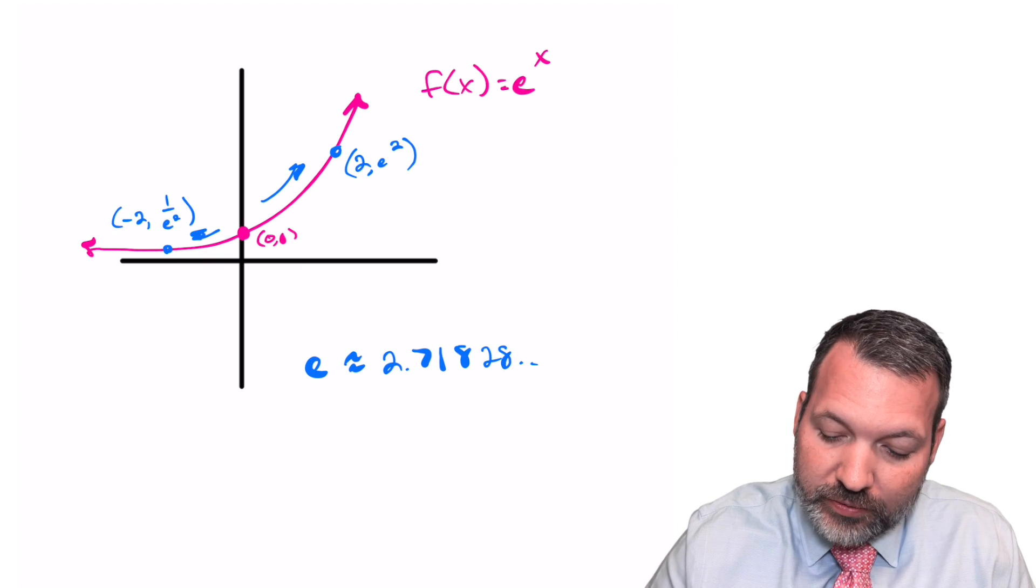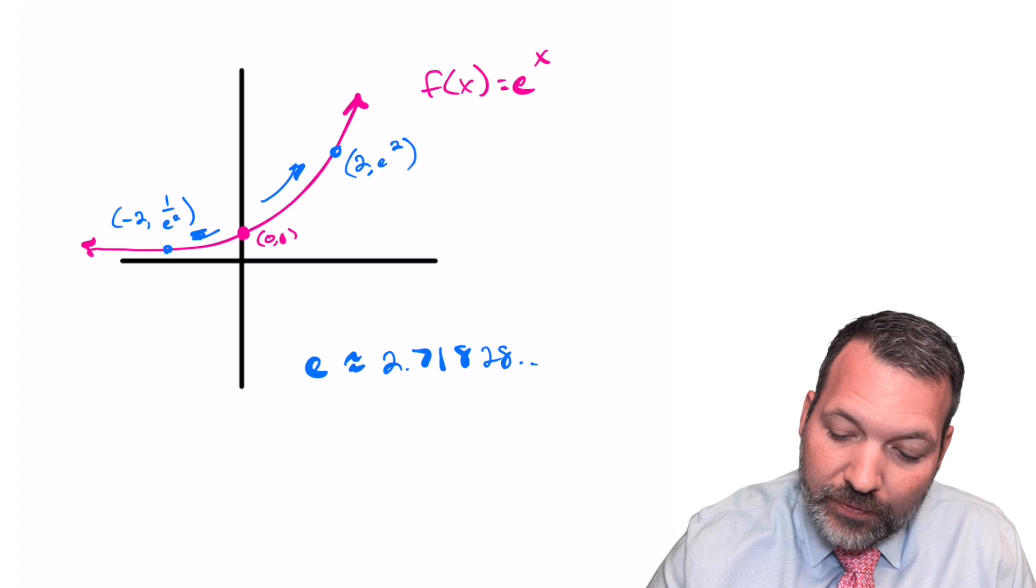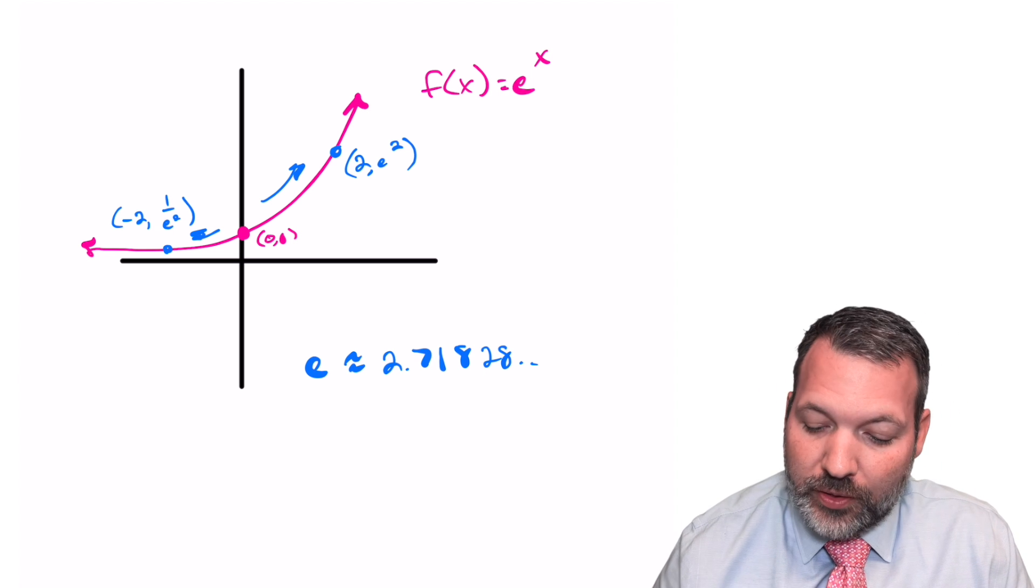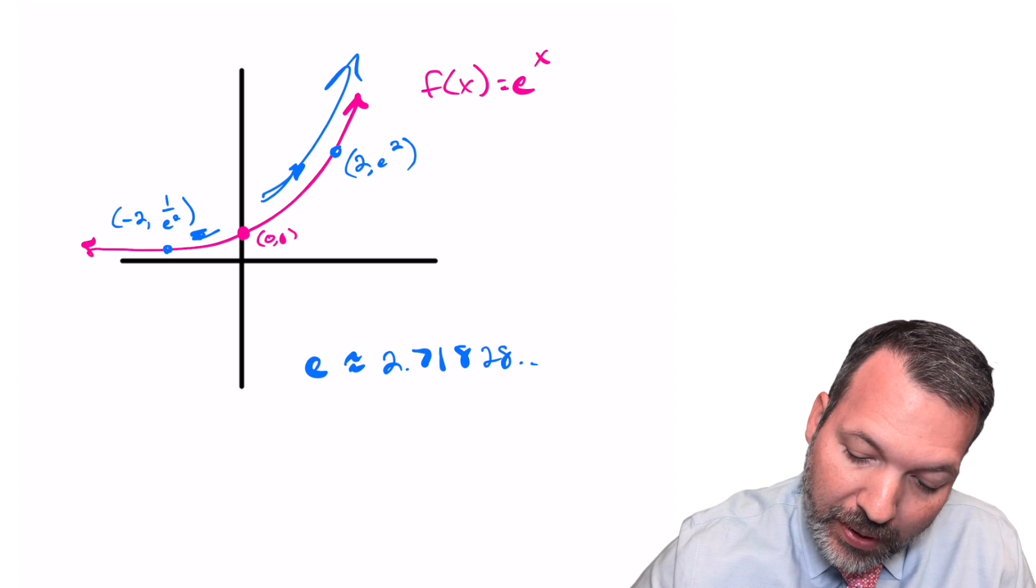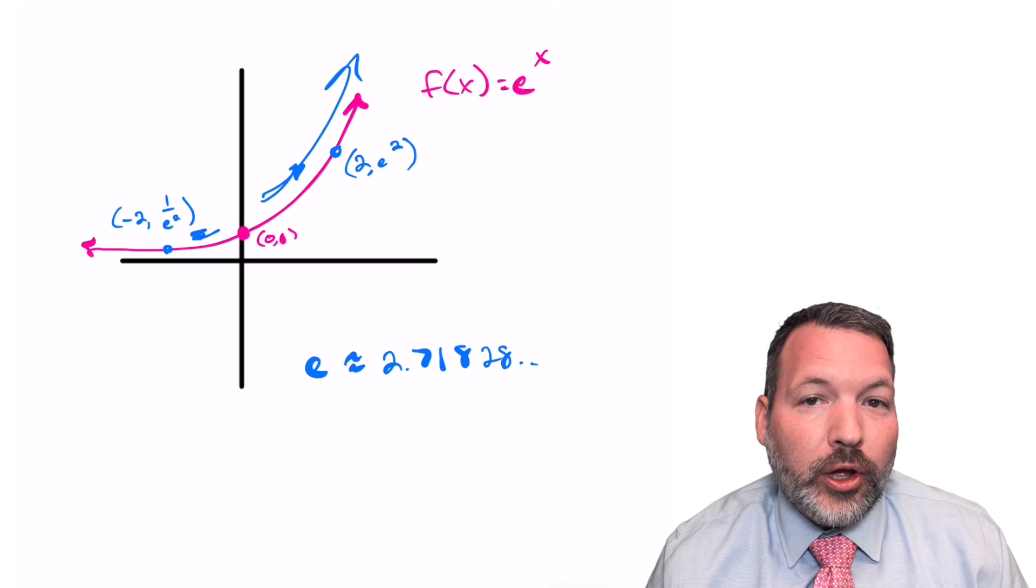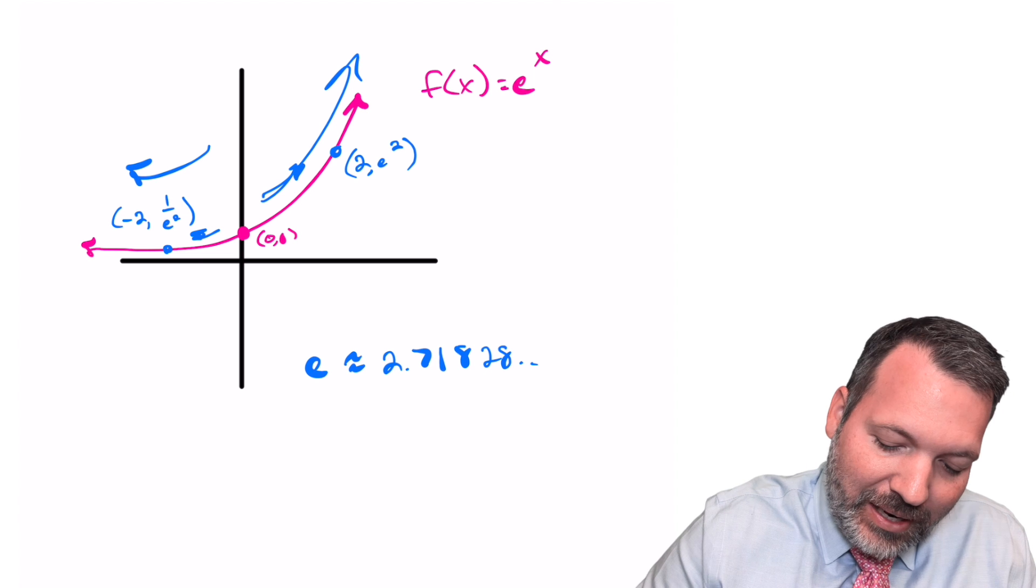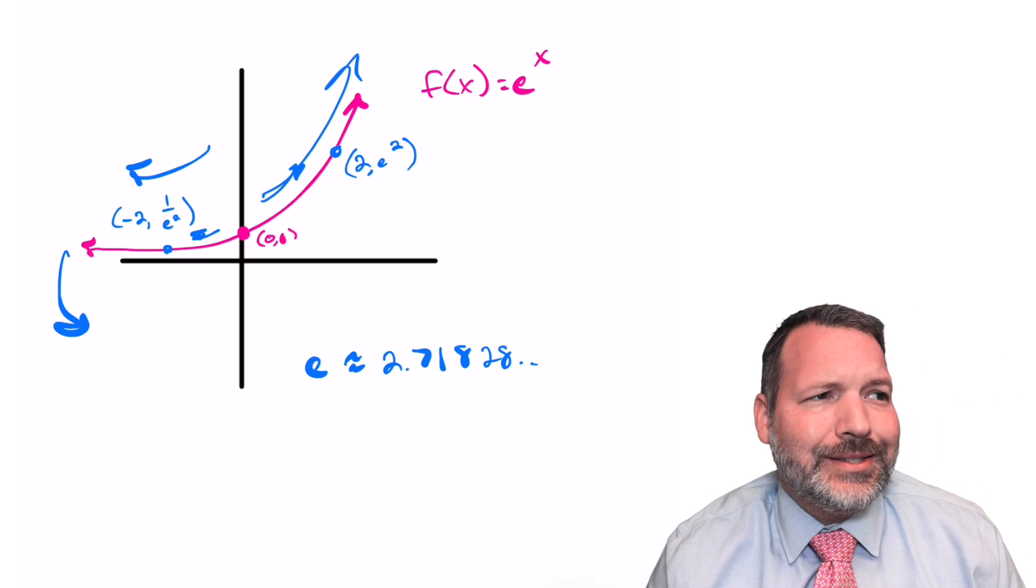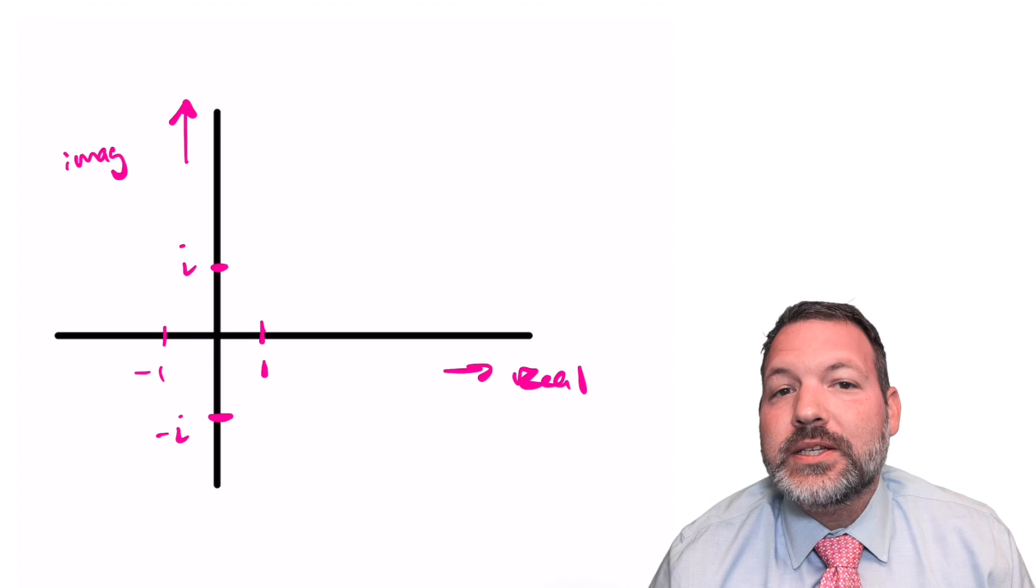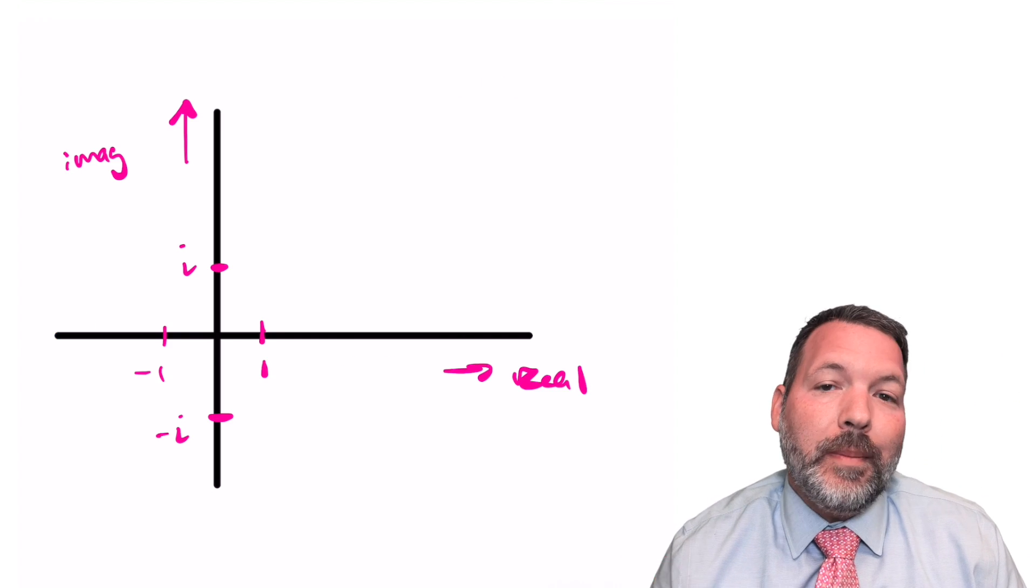We can see this in the typical picture for the e to the x curve. It starts like most exponential curves at zero comma one. And again, if you think of e as just a little smaller than three, as we repeatedly multiply by e, our values get much, much larger. Or for that matter, as we repeatedly divide by e, our values get smaller, but they never cross below the x axis. They shouldn't become negative unless that is we can bring in something like the imaginary unit.